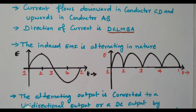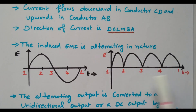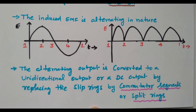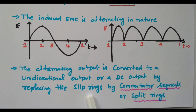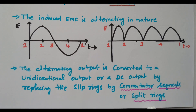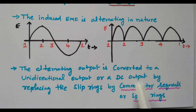Since we are discussing the DC generator, this alternating current must be converted into DC. The alternating output is converted to a unidirectional DC output by replacing the slip rings with a commutator segment, also called a split ring. A slip ring keeps changing the current direction, but a split ring — or commutator — ensures that when the conductor position changes, the current direction in the external circuit does not change, so it always flows in one direction — unidirectional. By using the split ring, we convert alternating current into direct current.